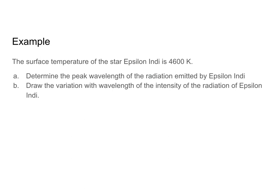So let's go ahead and take a moment to look at an example. The surface temperature of the star Epsilon Indi is 4600 Kelvin. Determine the peak wavelength of the radiation emitted by Epsilon Indi, and draw the variation with wavelength of the intensity of the radiation of Epsilon Indi. So I'm being asked to find lambda max. So isolating for lambda max, I get lambda max equals 2.9 times 10 to the negative three divided by my temperature.